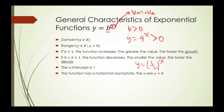The y-intercept will always be 1 when we have exponential functions in the form of y is equal to b to the x. And we notice that we have a horizontal asymptote on the x-axis, which means that the horizontal asymptote is y is equal to 0. Remember, a horizontal asymptote is a value that we keep getting closer and closer to but never actually reach.